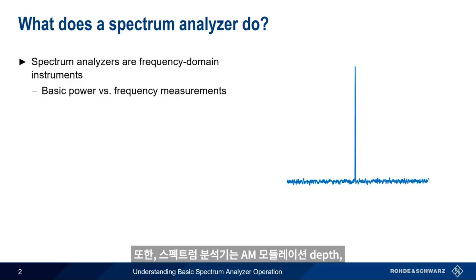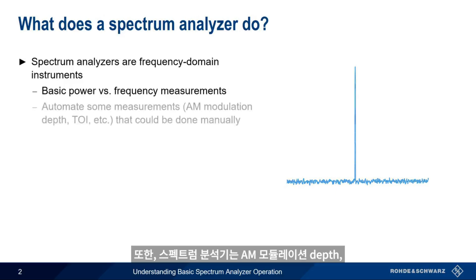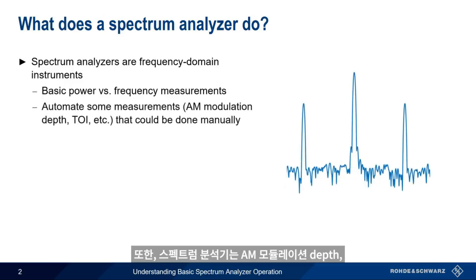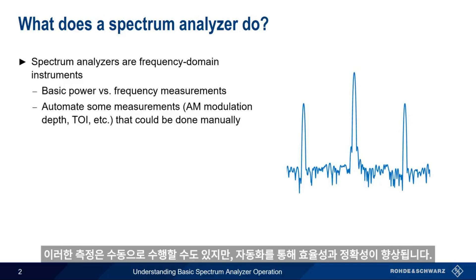Most spectrum analyzers also automate certain power versus frequency type measurements, like AM modulation depth, third order intercept, etc. These measurements could be done manually, but automating them increases efficiency and accuracy.